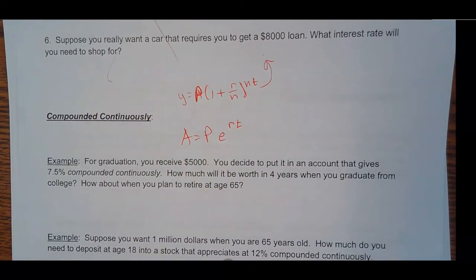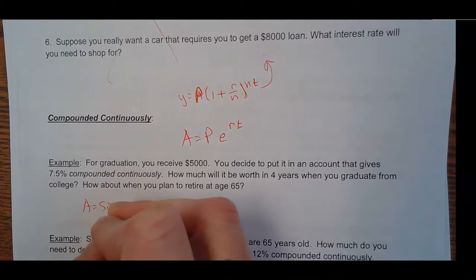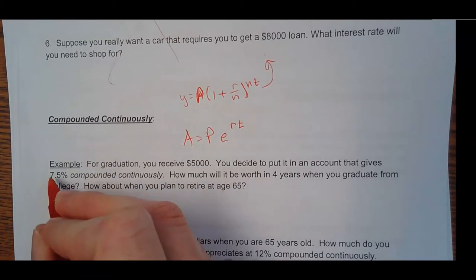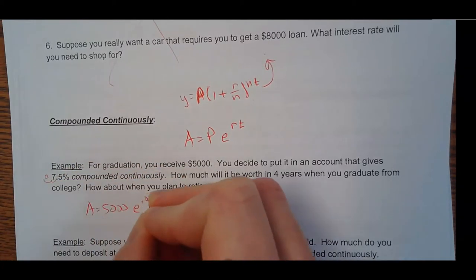So for graduation, you receive $5,000. You decide to put it in an account that gives 7.5% compounded continuously. I'll be honest, I've never seen anybody, any bank offer continuous interest, but let's just say it does. So if we compounded continuously, how much will it be worth in four years when you graduate from college? And then how about when you retire at age 65? So the amount would equal $5,000. And then E to the, and my rate is 7.5. You still make that a decimal. So move that two places. So 0.075.